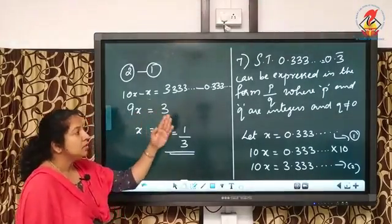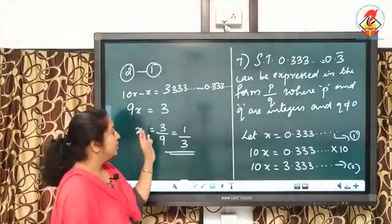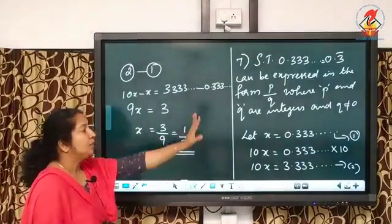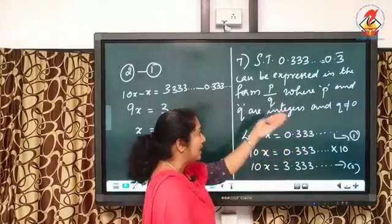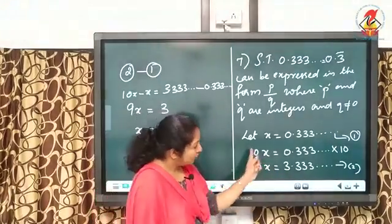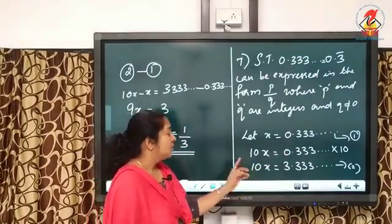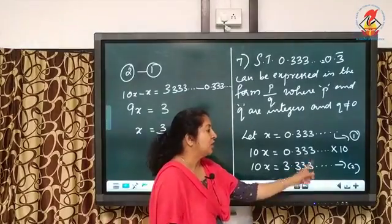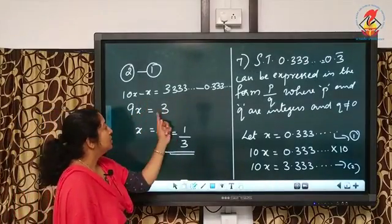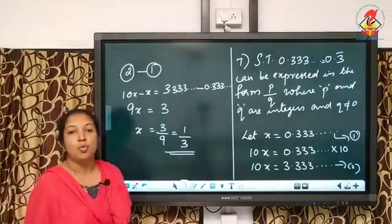This is the conversion of a non-terminating recurring decimal to a rational number. We took x as 0.333...; since one digit repeats, we multiply by 10 to get 10x equals 3.333... Then subtracting: 10x minus x equals 3, so 9x equals 3, and x equals 3 by 9, which equals 1 by 3.